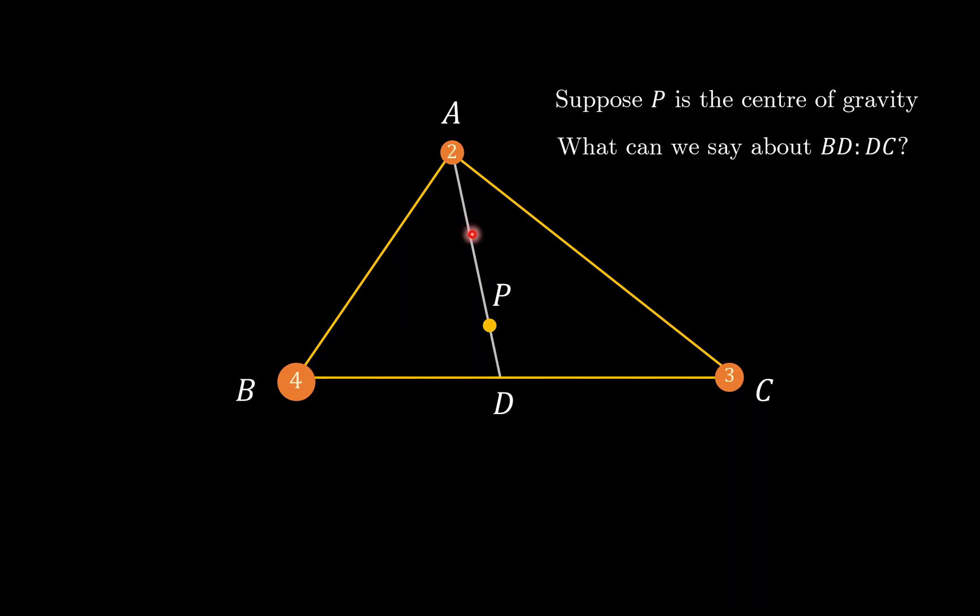If I extend AP to meet the point D here, what can we say about the ratio BD to DC? The interesting thing is, we can pretend that we put a rod beneath the triangular plane along AD, and because P is the center of gravity, the triangular plane will balance about the rod. Now we apply the principle of moment, and we see that weight 4 times the perpendicular distance to the rod equals weight 3 times the perpendicular distance to the rod. This means that the perpendicular distances are in the ratio 3 is to 4. Because the triangles here are similar, the right-angled triangles here, this means that BD to DC is also 3 is to 4.